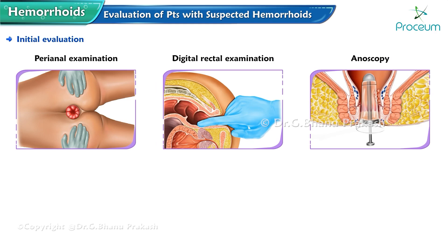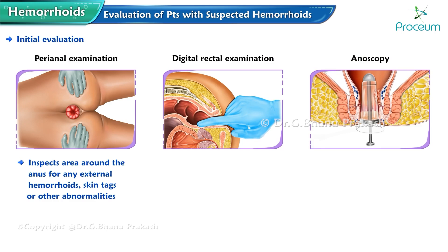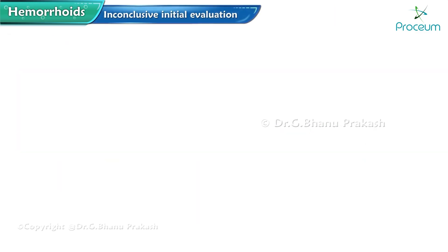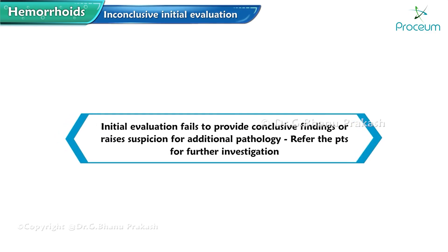During the perianal examination, the healthcare provider inspects the area around the anus for external hemorrhoids, skin tags, or other abnormalities. A digital rectal examination is then performed to assess for internal hemorrhoids, fecal impaction, or rectal masses. An anoscopy is carried out to visualize the lower rectum and anal canal, allowing identification of internal hemorrhoids or other causes of symptoms.